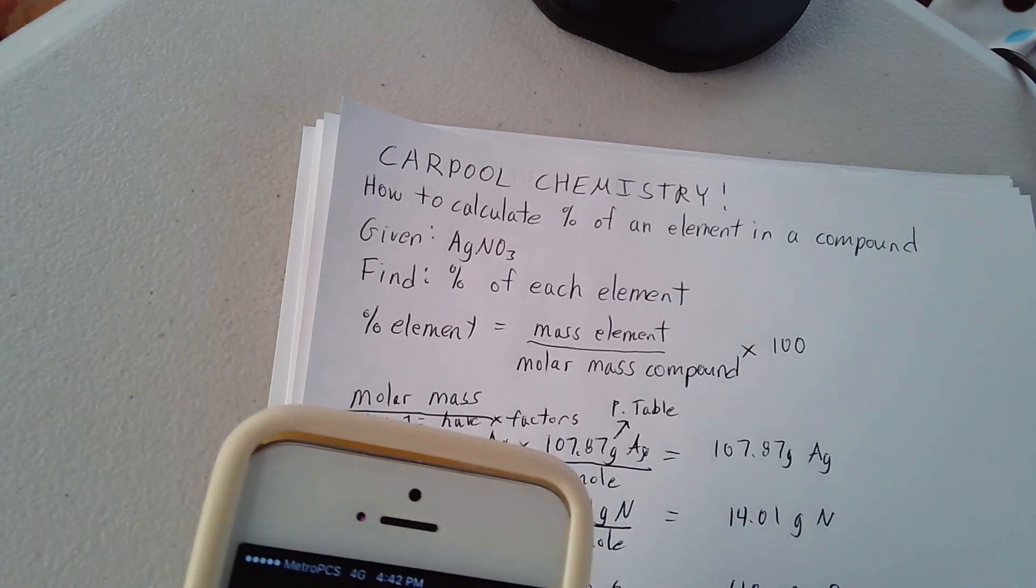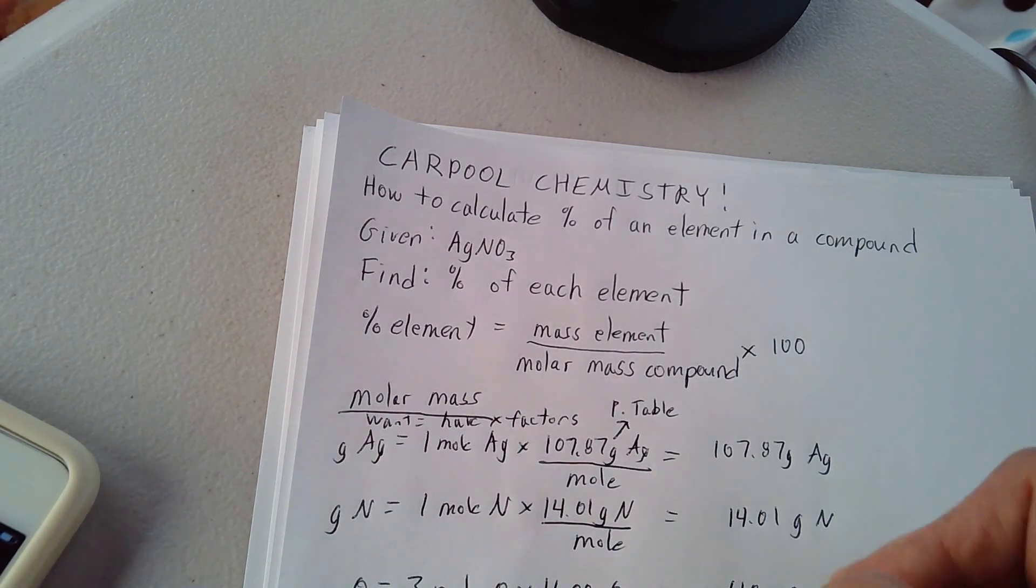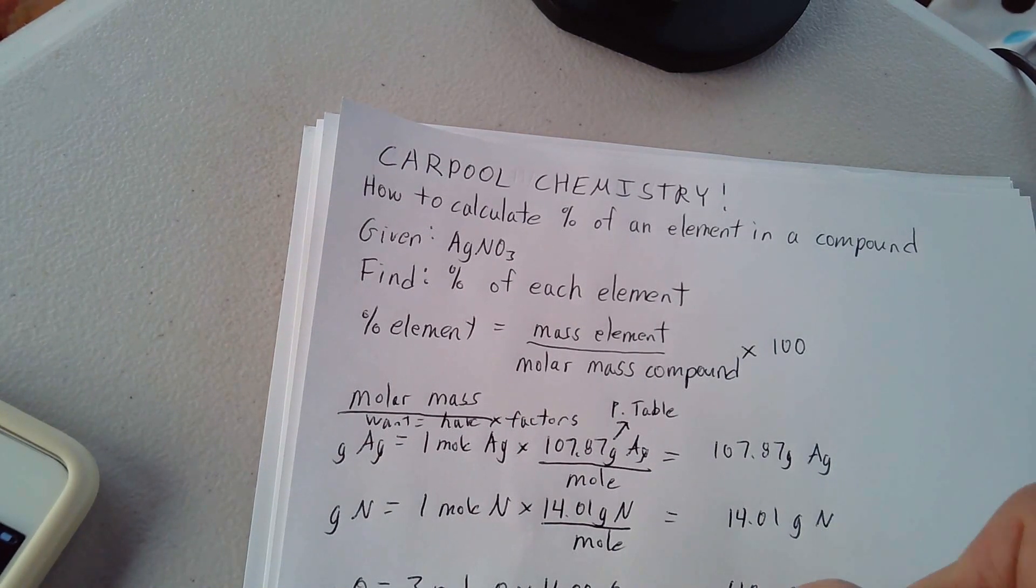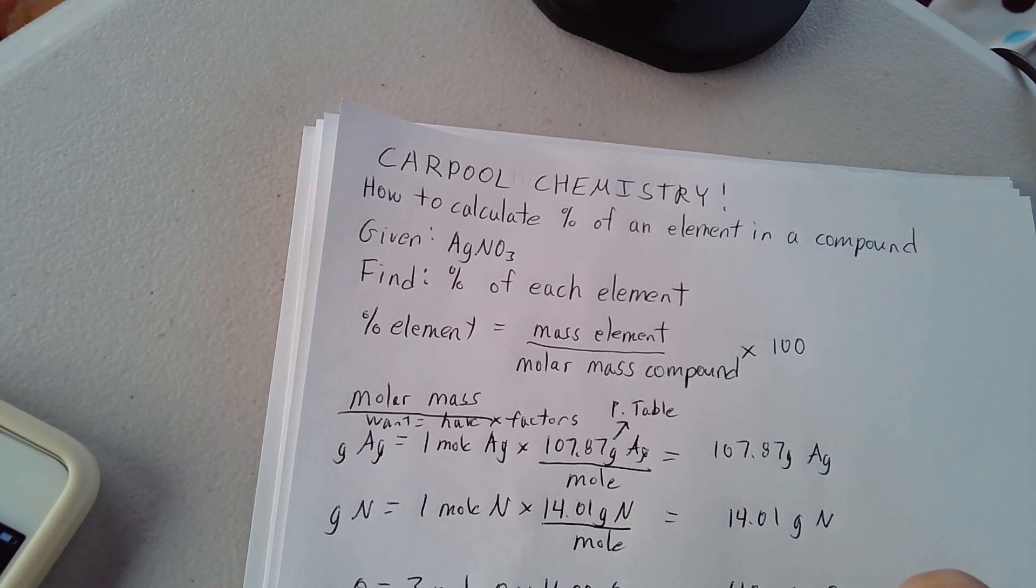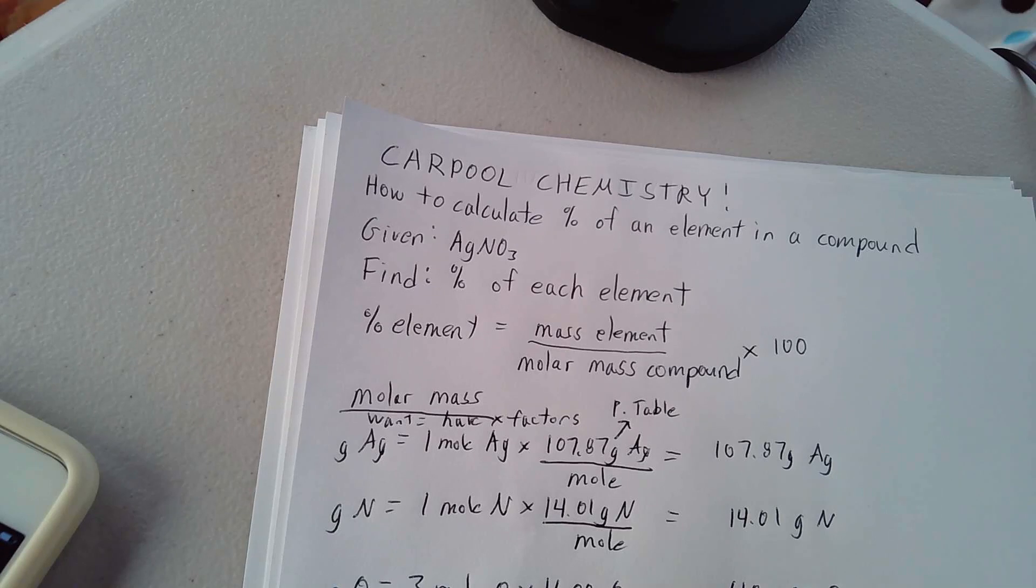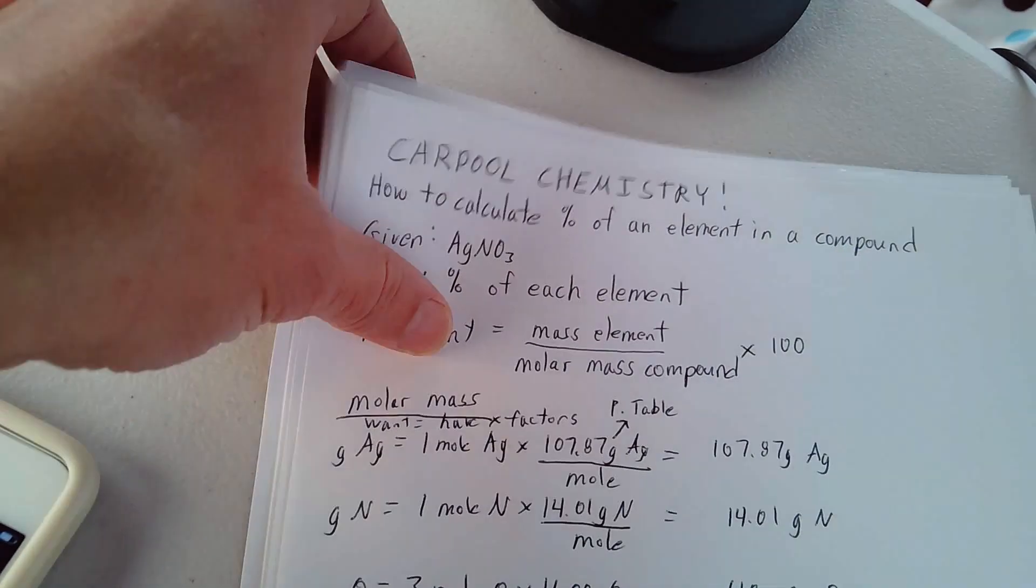And I get 107.87 plus 14.01 plus 48, and I'm looking at 169.88, and 169.88 grams of AgNO3 for every one mole. So that's the mass of the entire mole of silver nitrate.